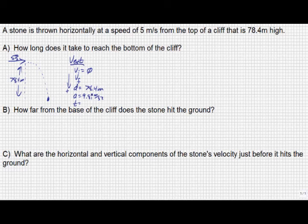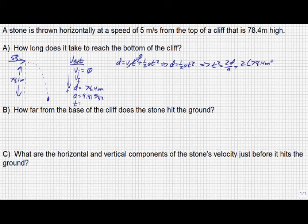Which kinematic equation can we use? A good one to start with might be d equals vi t plus 1 half at squared. In this case, vi is going to make that term go to zero. So we now have d equals 1 half at squared, or t squared must equal 2d over a, or 2 times 78.4 meters over 9.81 meters per second squared.